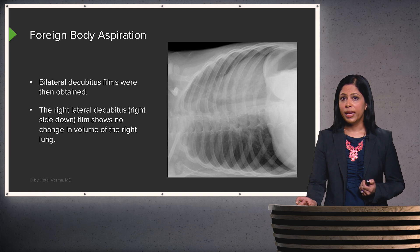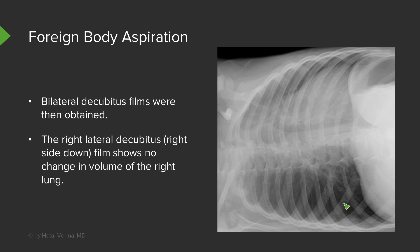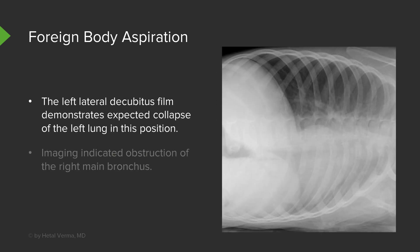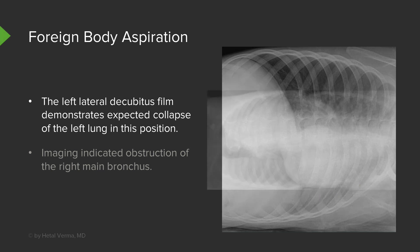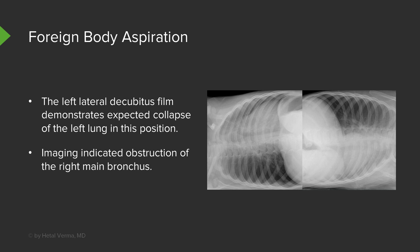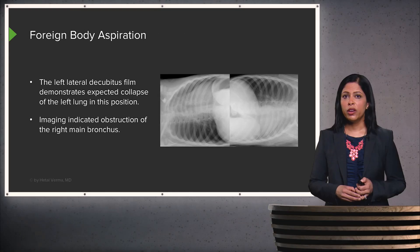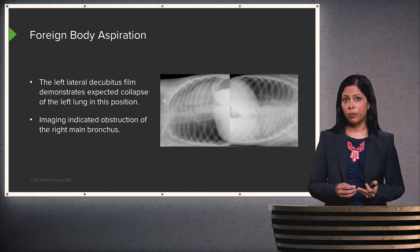The right lateral decubitus film shows no change in volume of the right lung. Generally, because of gravity, the lung in the lower position should decompress, and if it remains persistently hyperinflated, that's the side of the abnormality. The left decubitus film demonstrates normal collapse of the left lung — as expected, the lung in the lower position collapses due to gravity. This imaging indicates obstruction of the right main stem bronchus with a foreign body, and the patient underwent bronchoscopy to remove it. These are some common abnormalities encountered in the neonatal period and in children — very different from what you'd encounter in an adult.